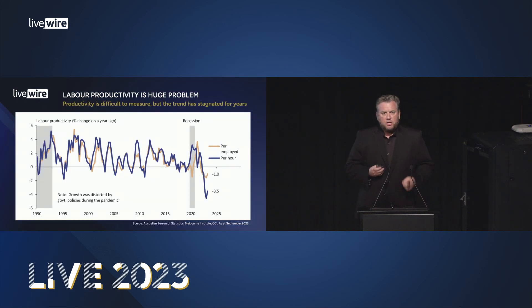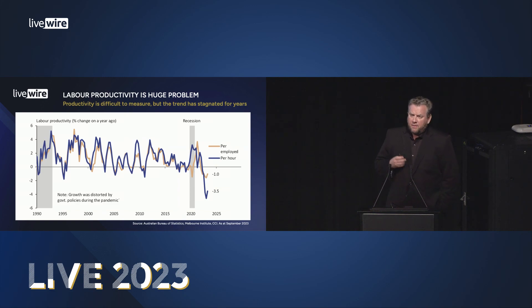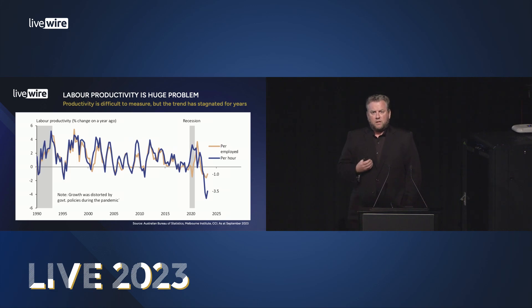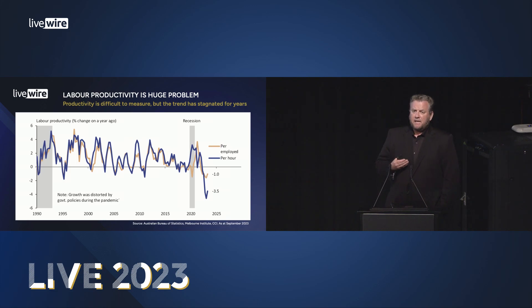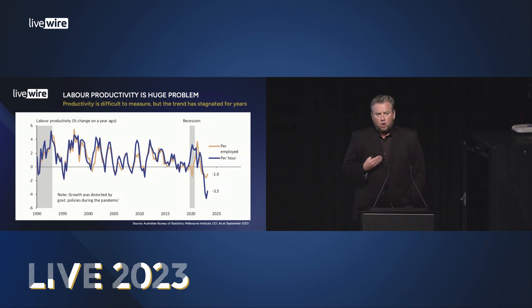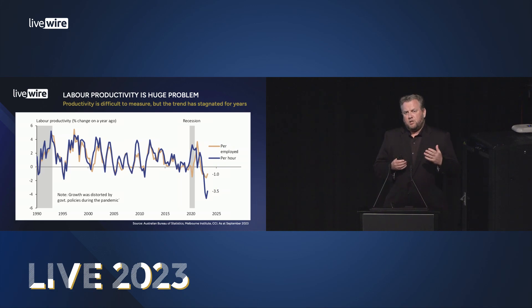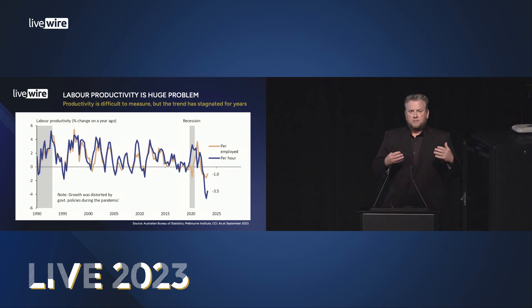The first challenge is we have an inflation crisis, and that inflation crisis is being driven by a productivity crisis. We have the worst productivity in decades. Labor productivity is running negative 3.5% year on year, and this is powering a lot of inflation. The problem is that productivity is measured as output per hour, and businesses are carrying too many people for the products they're producing.